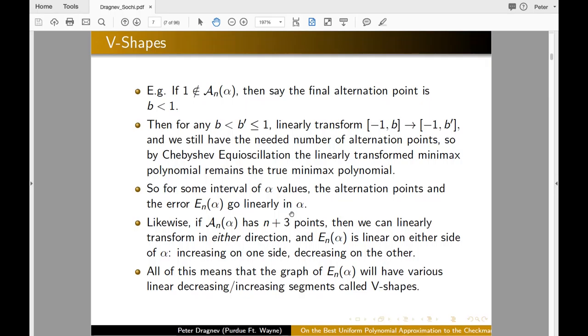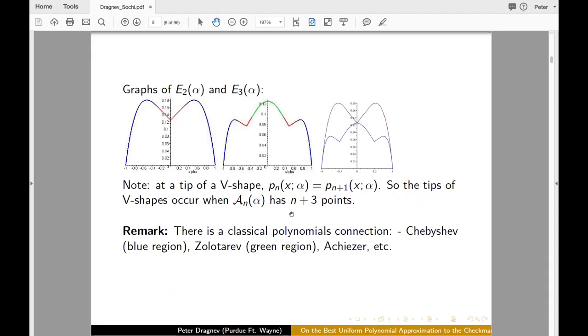So for example, if you start with n plus three points, when the alpha is this exceptional case, when we have n plus three points, we will be able to move, shift to the right or to the left and obtain two linear pieces. So we call that V shapes. And let me illustrate what the V shapes are. So this is E_2 alpha and E_3 alpha. And what happens is this is that section with the red, that is a V shape. Then subsequently another two shapes.